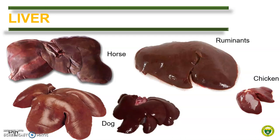Let us first discuss the liver. As shown here are the parietal surface of the liver of different domestic animals. The liver is the largest gland in the body and is important in the digestive system because of the production of bile. Bile is stored and concentrated in the gallbladder before being drained into the duodenum. There is a great variation in size between the different species and even between individuals of the same species, largely depending on the body weight and age.